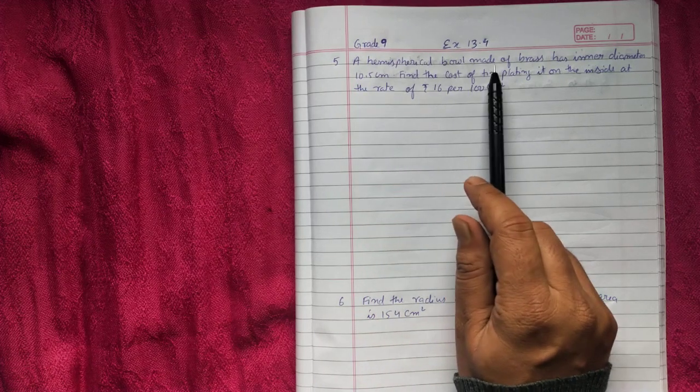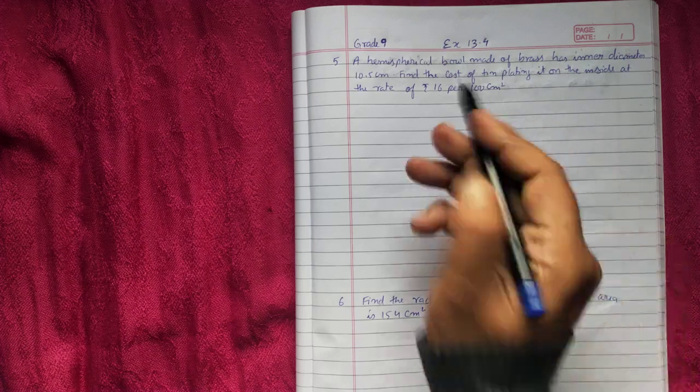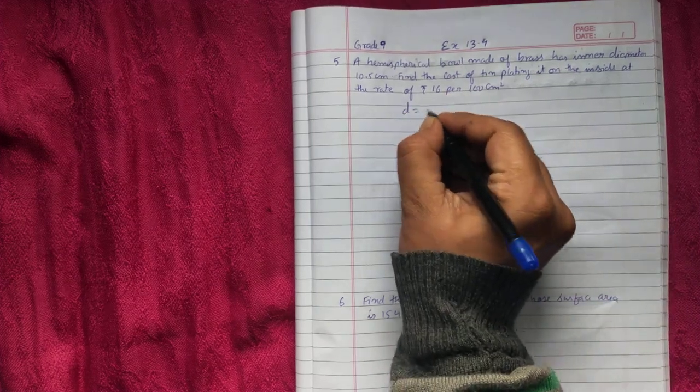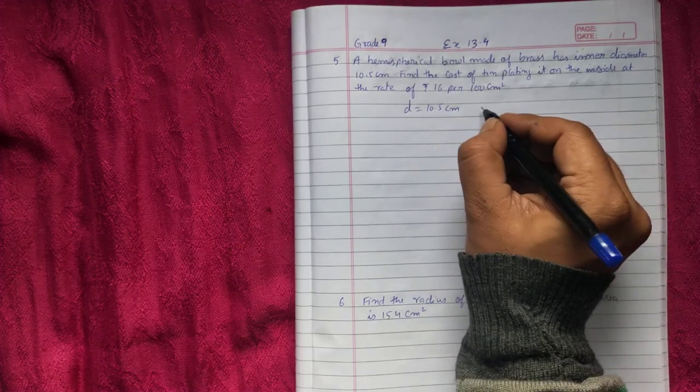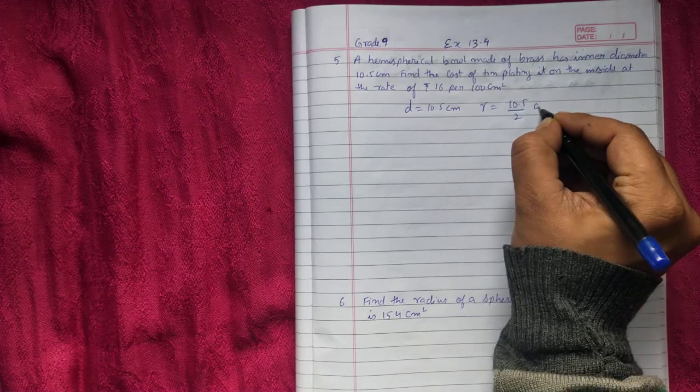A hemispherical ball made of brass has an inner diameter, so diameter is given, you can write 10.5 cm. Whenever you see diameter, make it radius, 10.5 by 2 cm.